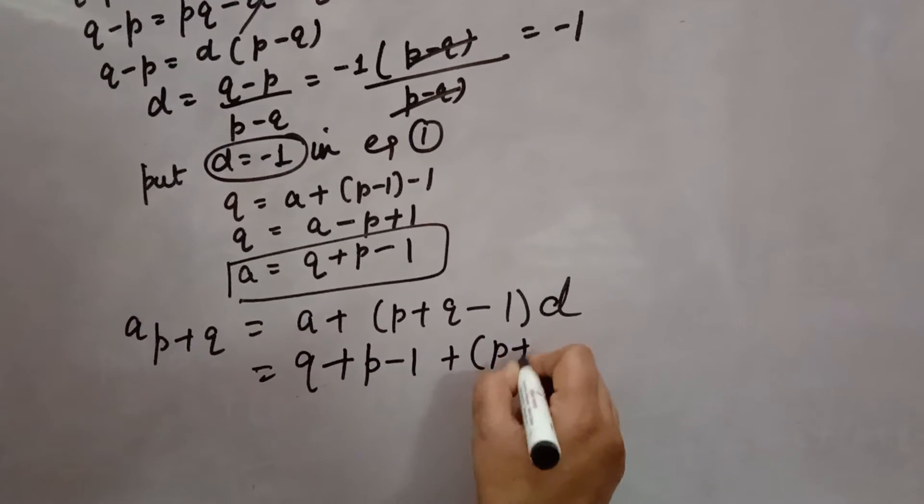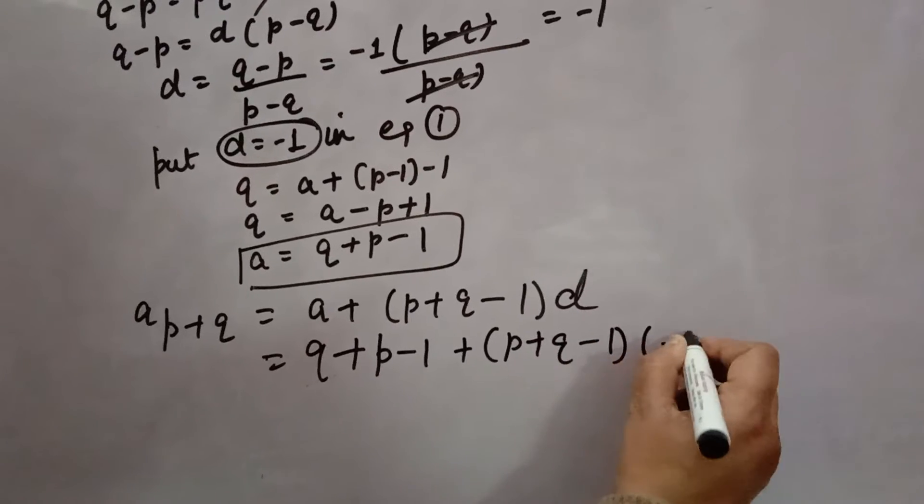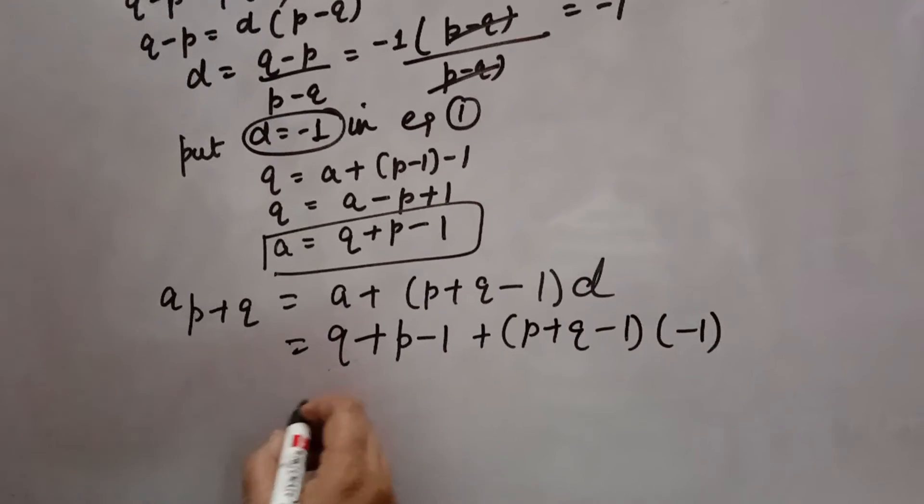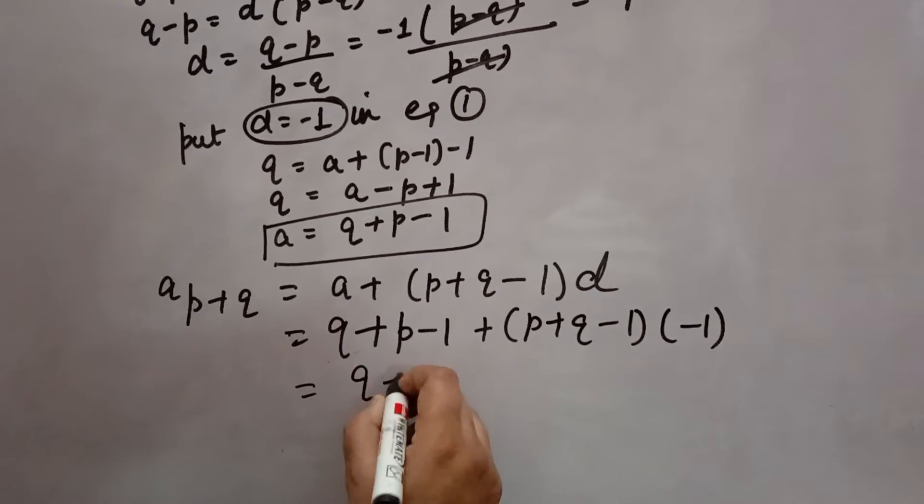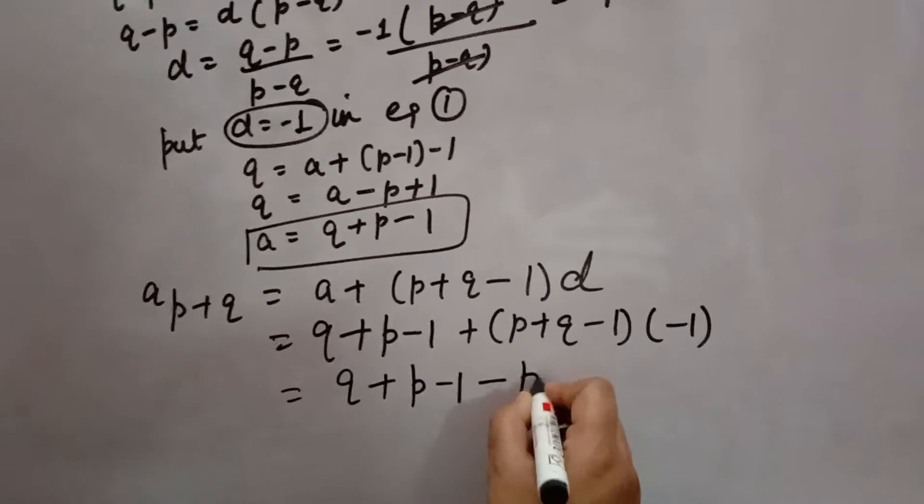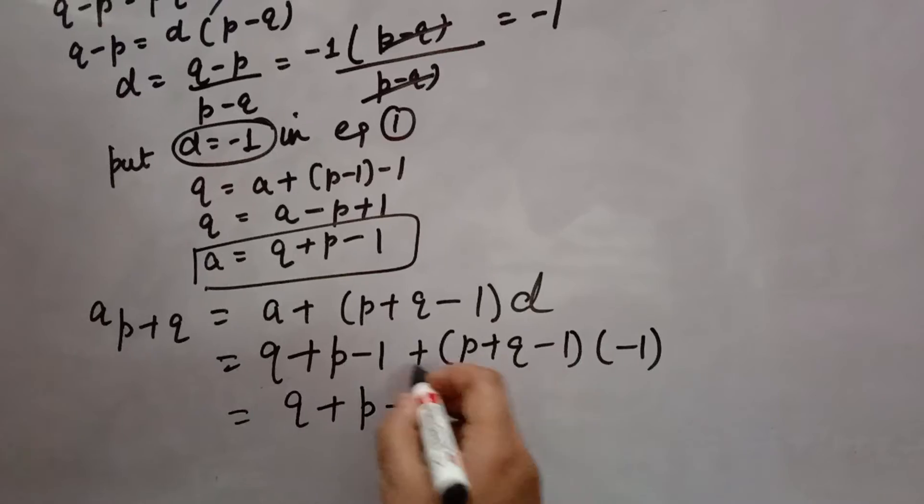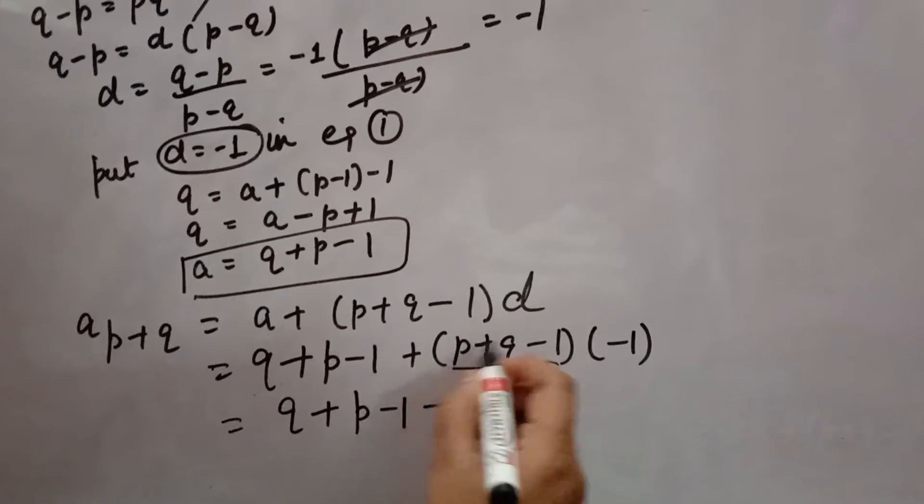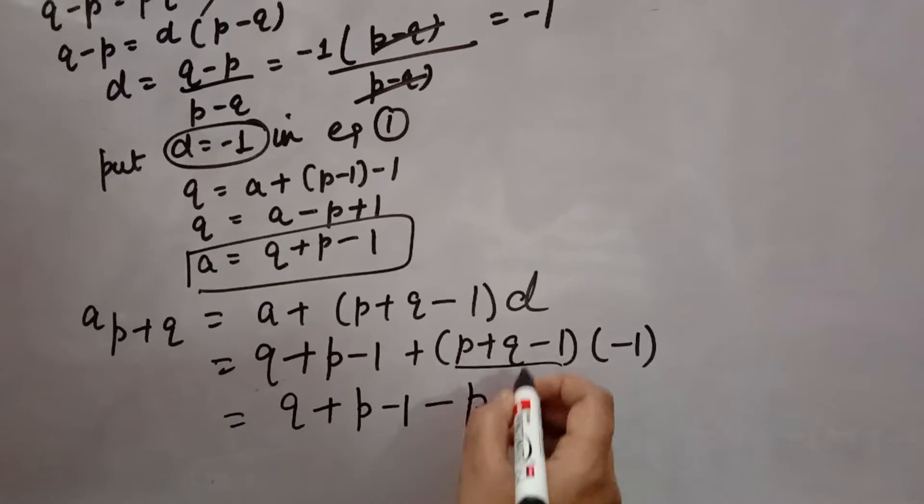This gives: Q + p - 1 + (p + q - 1)(-1). The signs change because of -1: Q + p - 1 - p - q + 1.